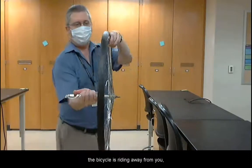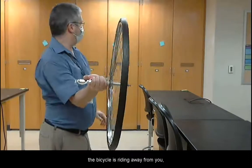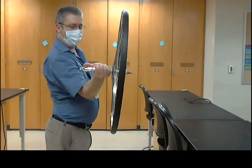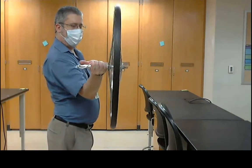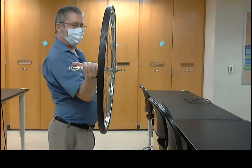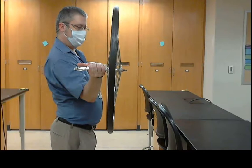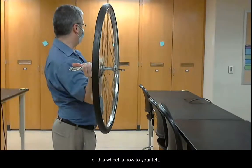If the bicycle is riding away from you, according to the right hand rule, the angular velocity of this wheel is now to your left.